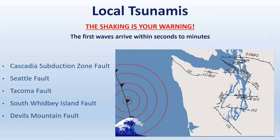For local tsunamis, the shaking is your warning. The first waves could arrive within 15 to 20 minutes for the outer coast for a Cascadia subduction zone earthquake — not a lot of time. Local tsunami sources include the Cascadia subduction zone, the Seattle fault, the Tacoma fault, South Whidbey Island fault, and Devils Mountain fault — faults that crisscross east-west through Puget Sound and the Salish Sea. So the shaking has happened — it's a local event. First, you need to survive the earthquake. Drop, cover, and hold on and protect yourself. Do not try to run — most injuries during an earthquake happen when people fall while moving during shaking or are struck by falling objects.